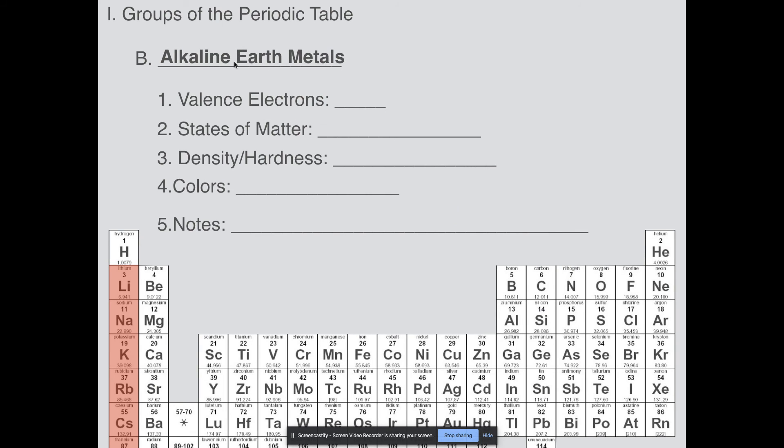Next, the alkaline earth metals. Notice that it's alkaline, not alkali. Right here we have the second column on the periodic table: beryllium, magnesium, calcium, strontium, barium, and radium. They have two valence electrons, hence why they're in the second column.